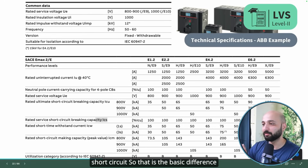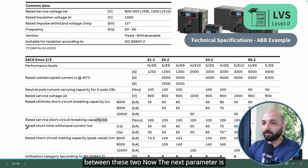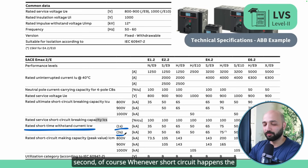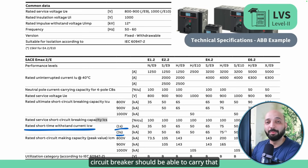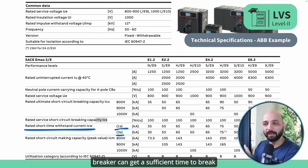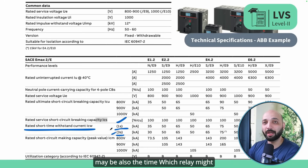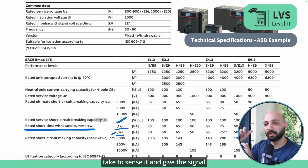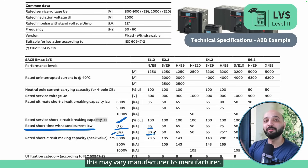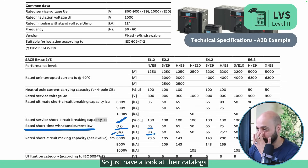The next parameter is the rated short circuit withstand current, given for one second or three seconds. Whenever a short circuit happens, the circuit breaker must be able to carry that current for a certain time so it has sufficient time to break, and also to allow the relay time to sense and send the trip signal. For one second, the withstand rating is 35 kA, but if it continues for three seconds, the rating drops to 30 kA. This may vary by manufacturer.